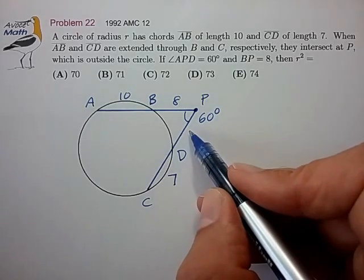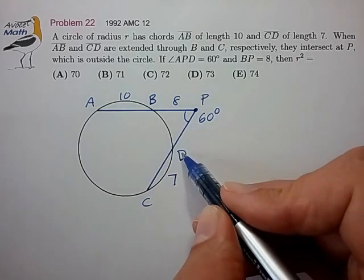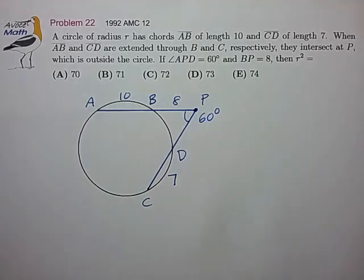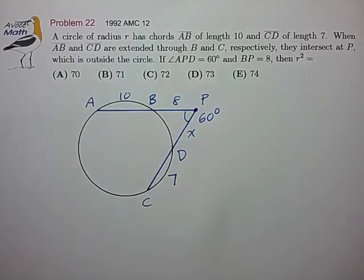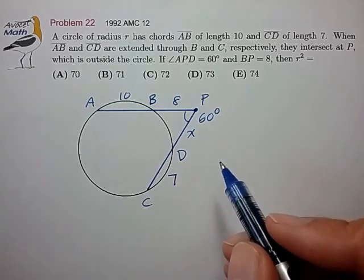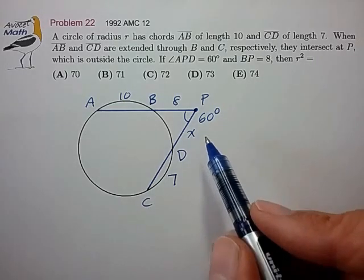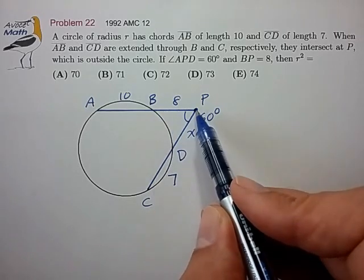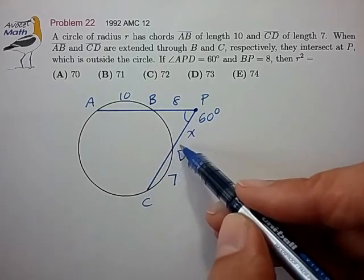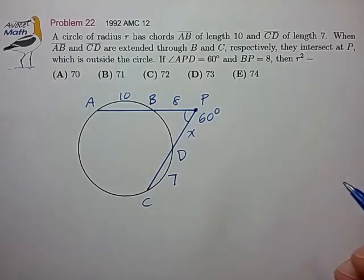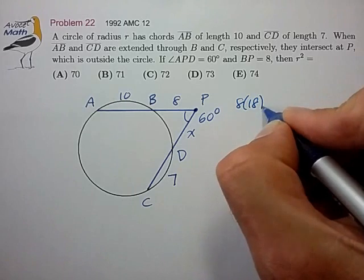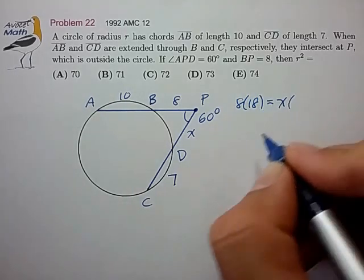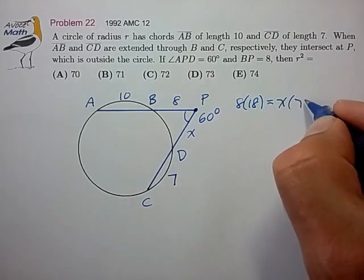But I do know how to calculate one other length in this figure. I think I know how to calculate DP from the secant multiplication formula. So let's try to calculate the length of DP just to see if we can get this problem started. So we'll call that x. And from the secant multiplication formula, we know that AP times BP is equal to CP times DP. And from that we can draw out that 8 times 18 is equal to x times x plus 7.